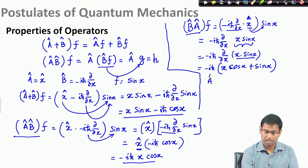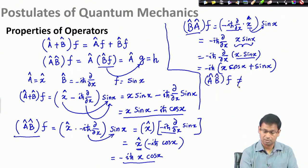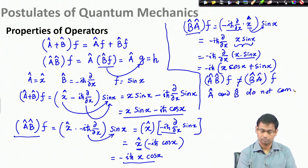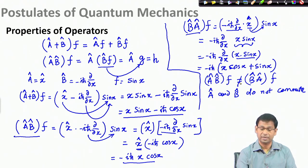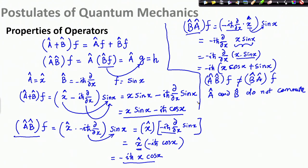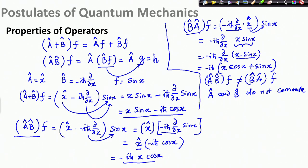This means operators a and b do not commute. If the action of a·b on f had been equal to the action of b·a on f, I would say that operators a and b commute. However, in the example shown, the operators do not commute. We will come back to this commutation relation between operators in future classes, and we will continue to discuss further properties of operators.